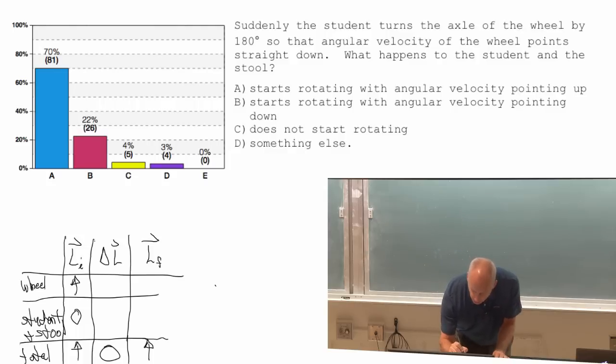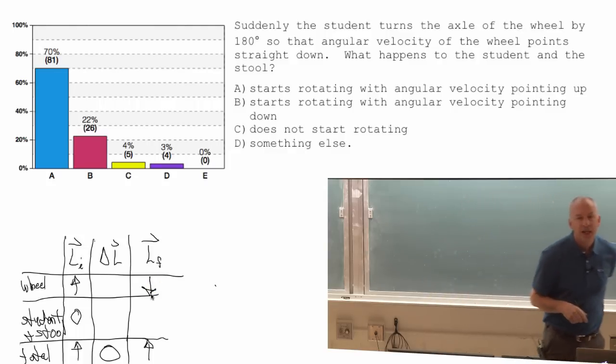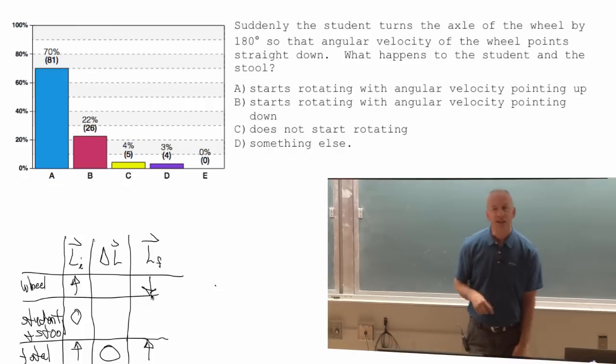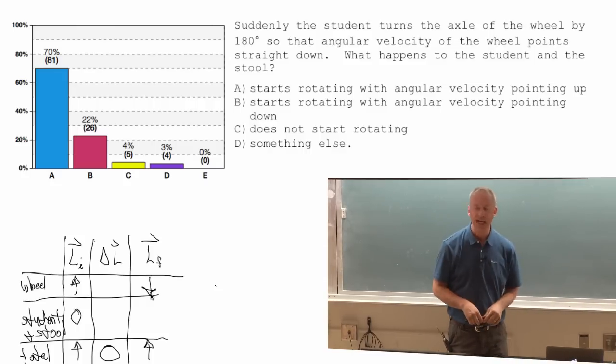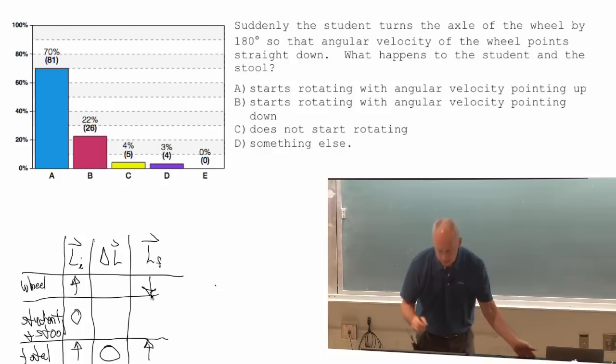And so, when the wheel gets flipped, so suddenly it's rotating in the other direction, it takes a torque to change the angular momentum of the wheel. And so she feels the torque in the other direction.